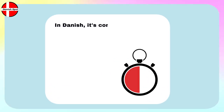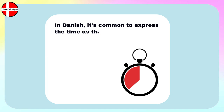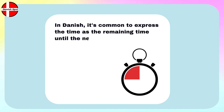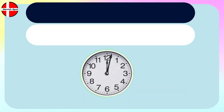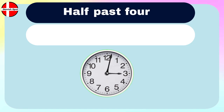In Danish, it's common to express the time as the remaining time until the next hour when it's past the half hour mark. Don't worry, we will explain all here for you. For example, in English you say 'half past four,' but in Danish you say 'halv fem.' Literally, it means 'half five,' and it can be understood as half of the way to five.